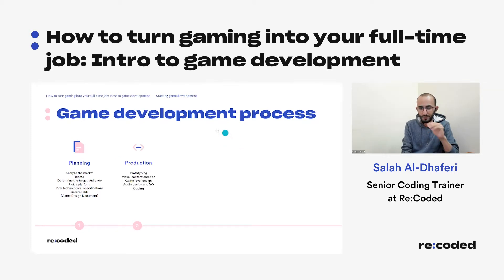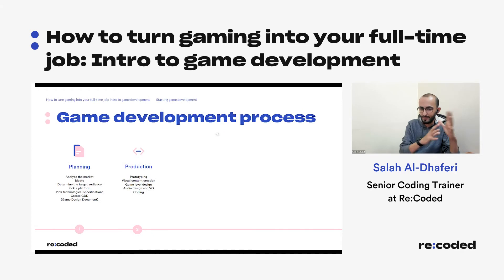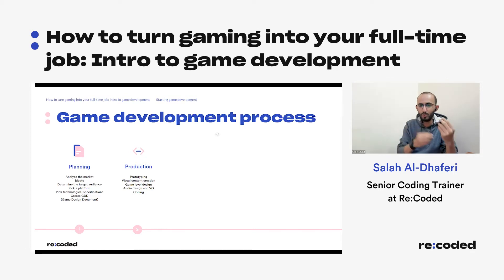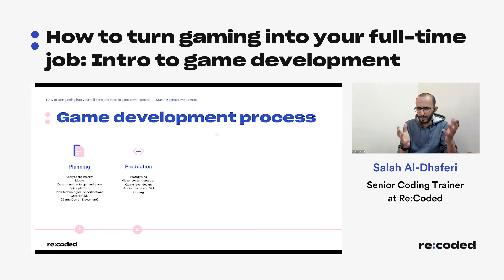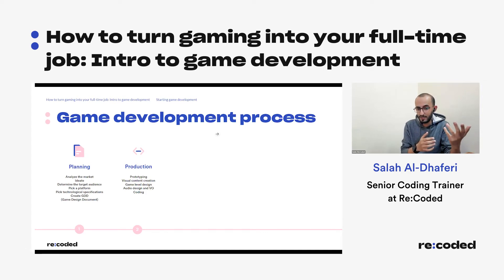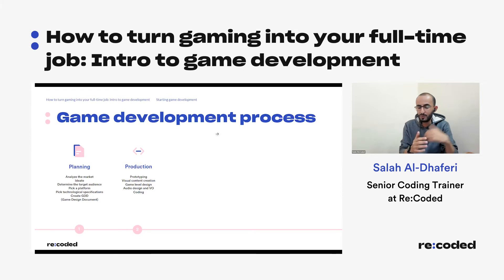Next we have production. You've finished planning and now you're ready to develop. You begin by prototyping — creating a small version, maybe one or two levels. You check if it's playable and makes sense, test with a few people from your target audience, and you can show it to potential investors. You start designing levels, working on audio design and voiceover for your characters, and of course you'll be doing lots of coding.